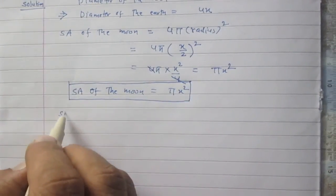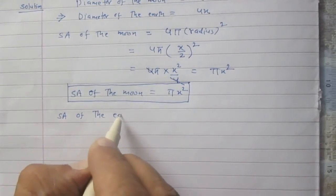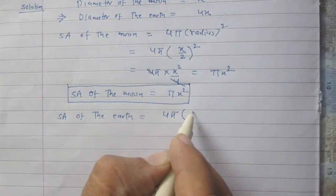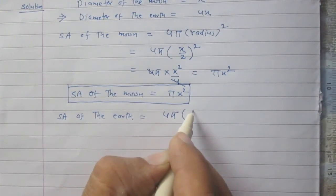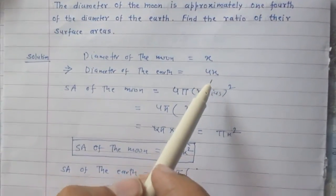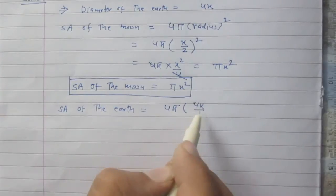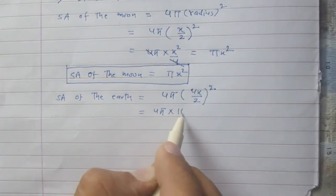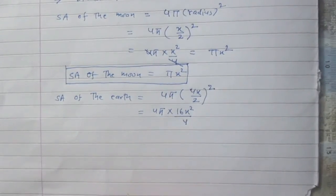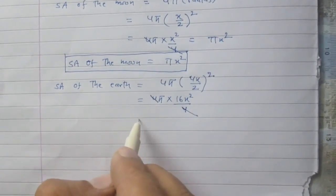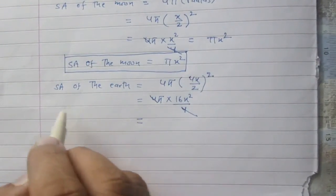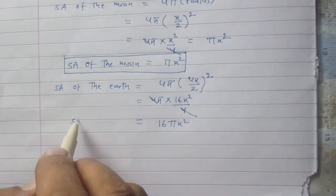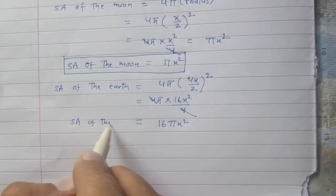Similarly, the surface area of the earth using the same formula: 4π times half of the diameter squared. The diameter of the earth is 4x, so its radius is 4x/2. So it is 4π times (4x/2) squared, which gives 4π times 16x²/4. We get the surface area of the earth is 16πx².